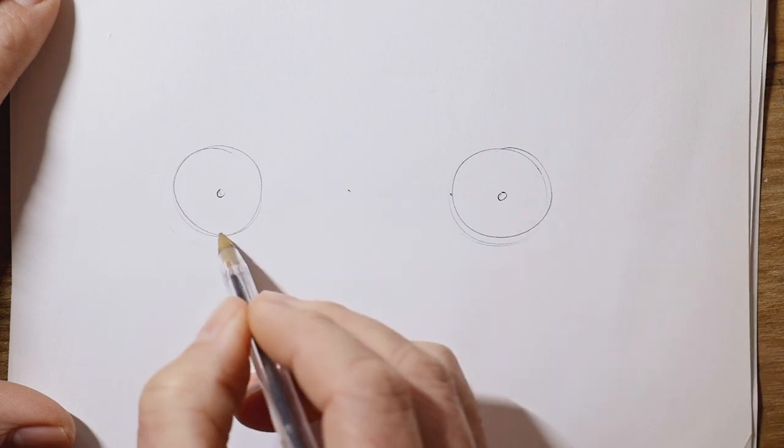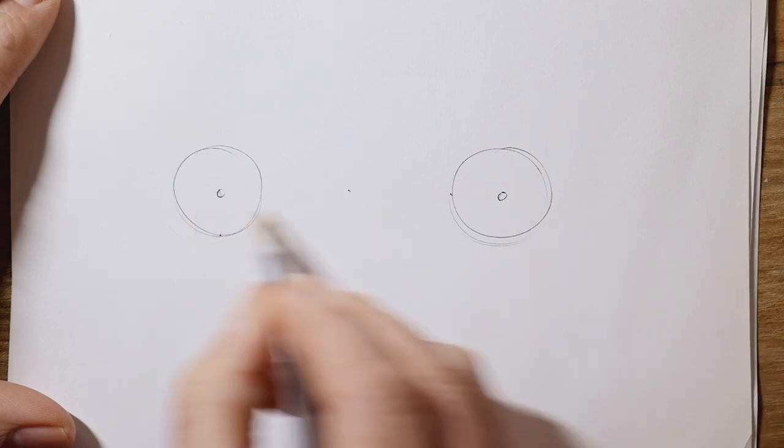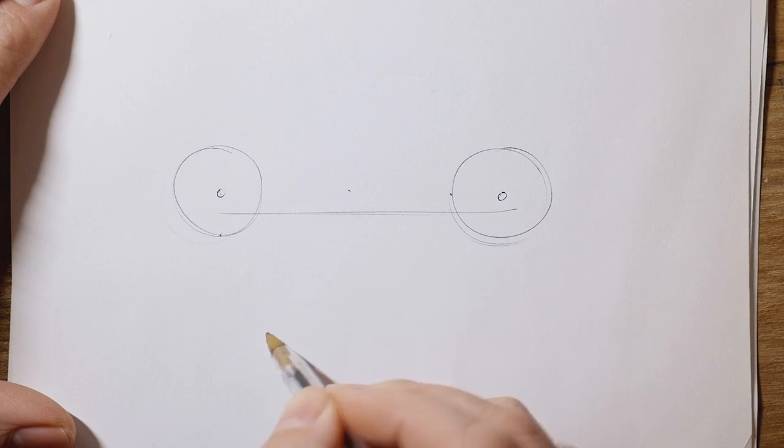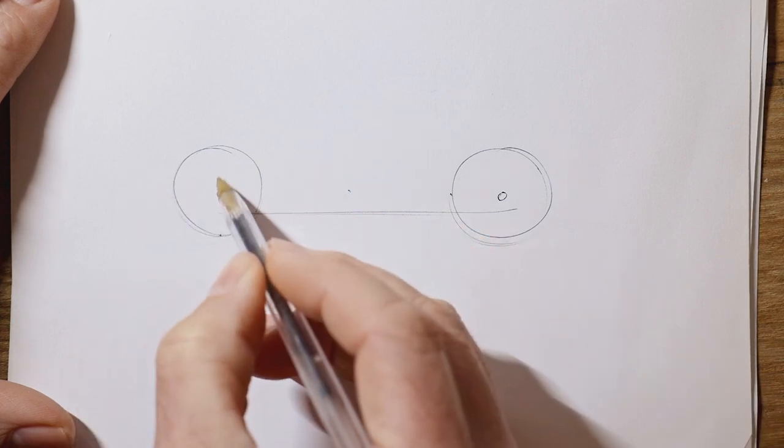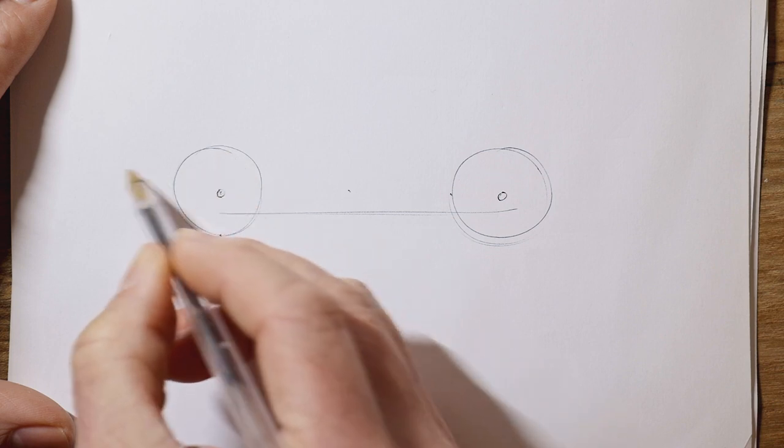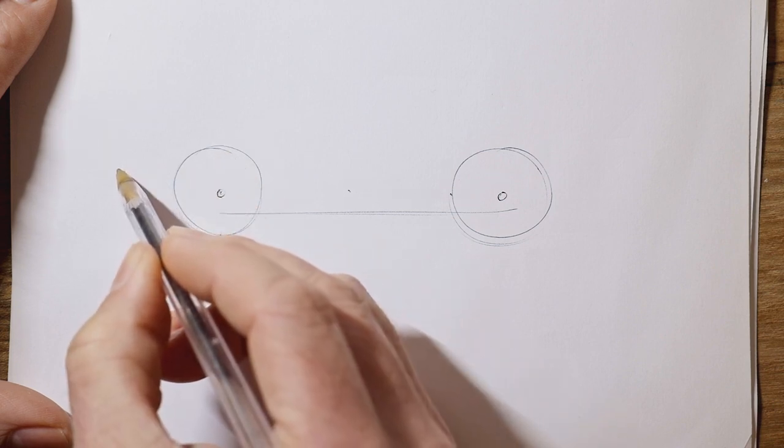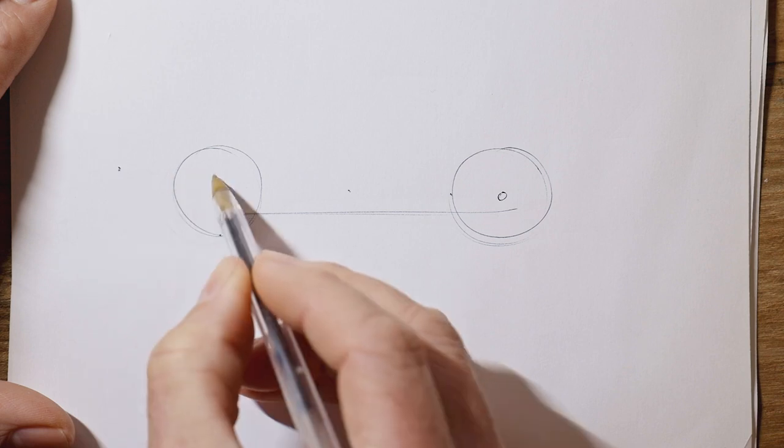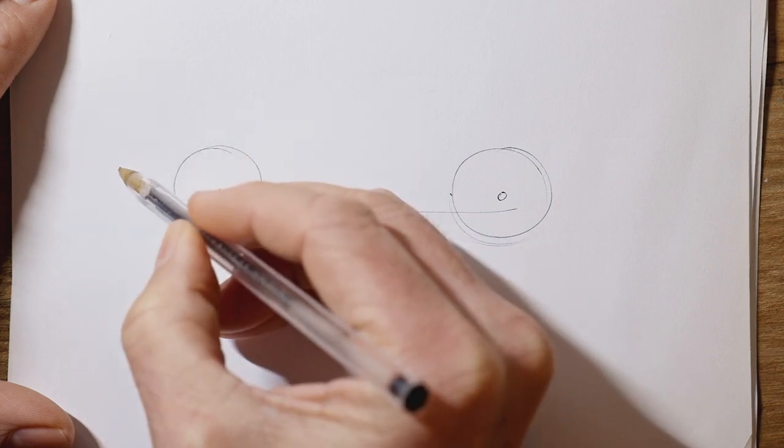And then the base of the car, sort of halfway between the ground and the center of the wheels. Then the front of the car, if you come halfway between the middle of the wheel and the top at the front, and then come forward another half a wheel, that point there is the nose of your car.